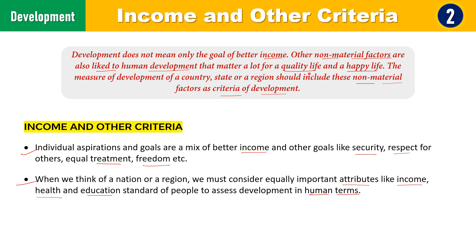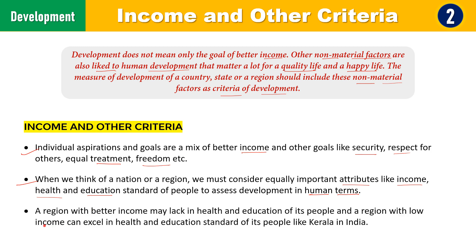Non-material factors such as security, respect, and treatment are linked to human development — human development depends on these factors. A region with better income may lack in health and education of its people, and a region with low income can excel in health and education standards, like Kerala in India. Kerala has the highest literacy in India though it may lag behind other states in per capita income.